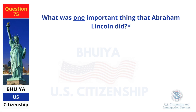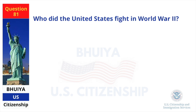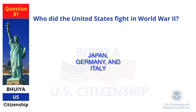What was one important thing that Abraham Lincoln did? Freed the slaves. Who did the United States fight in World War II? Japan, Germany and Italy.